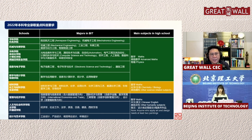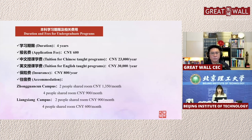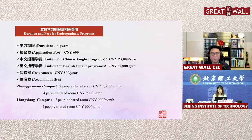Let's look at tuition fees. For the undergraduate program, the duration is four years. The application fee is 600 RMB. Chinese-taught program tuition is 23,000 RMB per year; English-taught is 30,000 RMB per year. Insurance is 800 RMB per year. For students studying online due to border restrictions, you only need to pay the application fee and tuition fee — no accommodation or insurance fee is required.